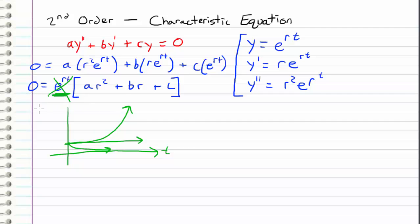So what I'm left with is something that we refer to as the characteristic equation. So after we cancel out e to the rt, we get 0 is equal to ar squared plus br plus c.